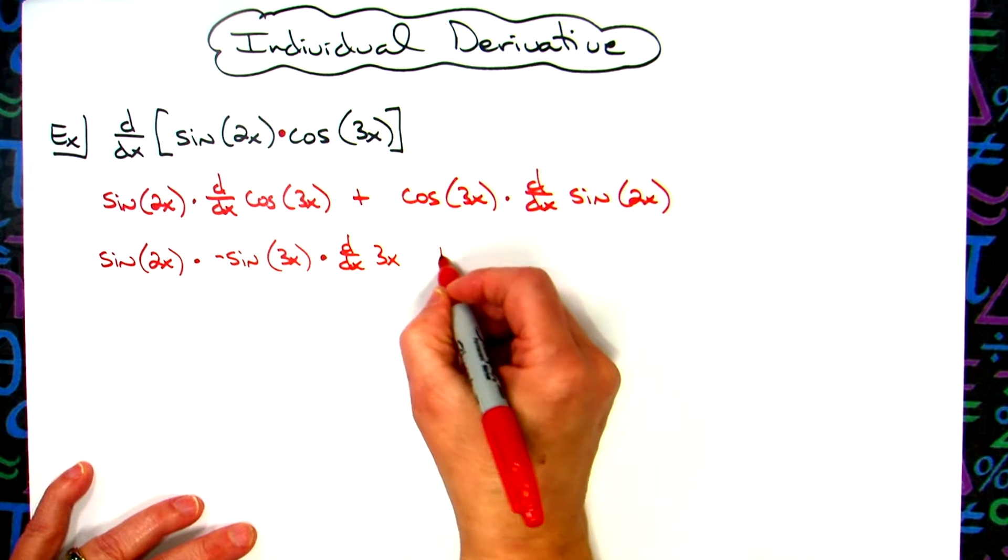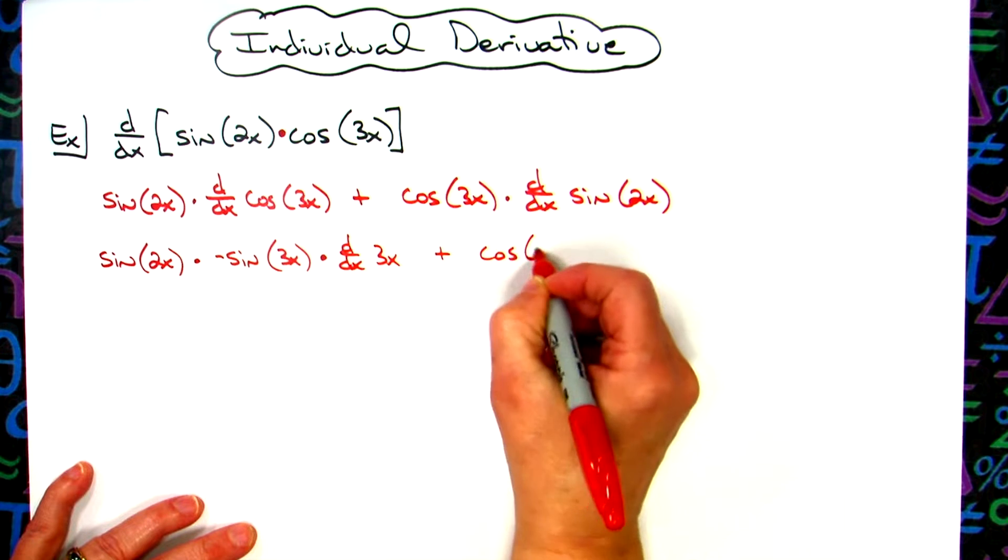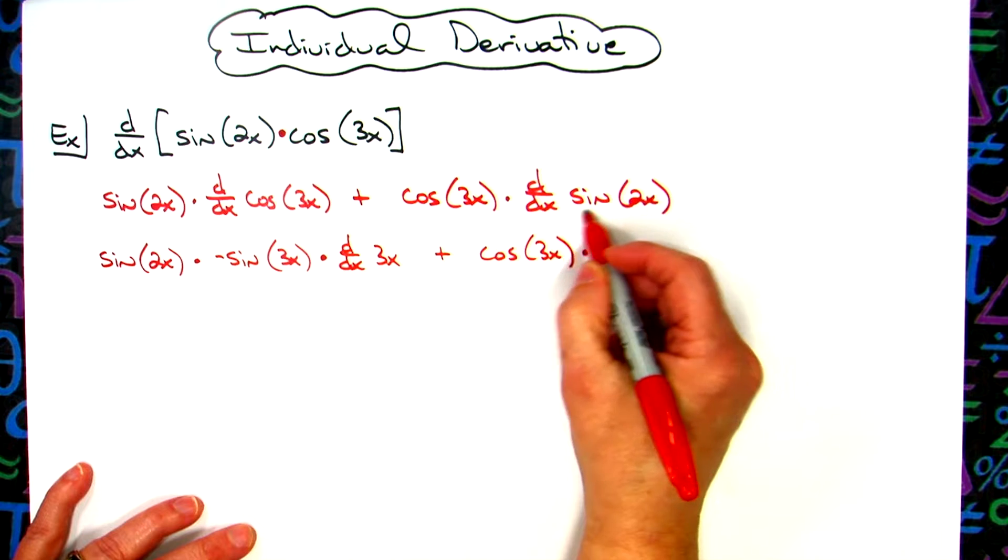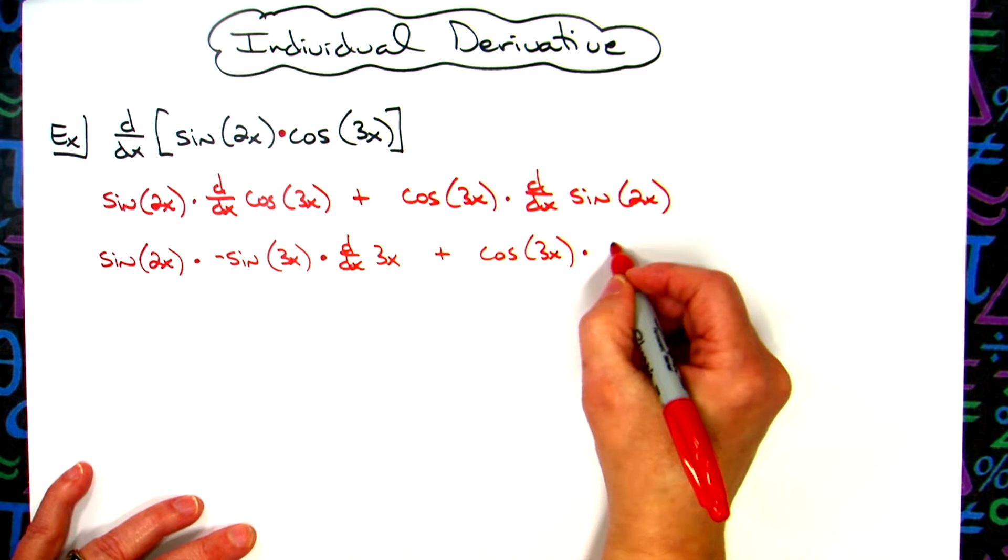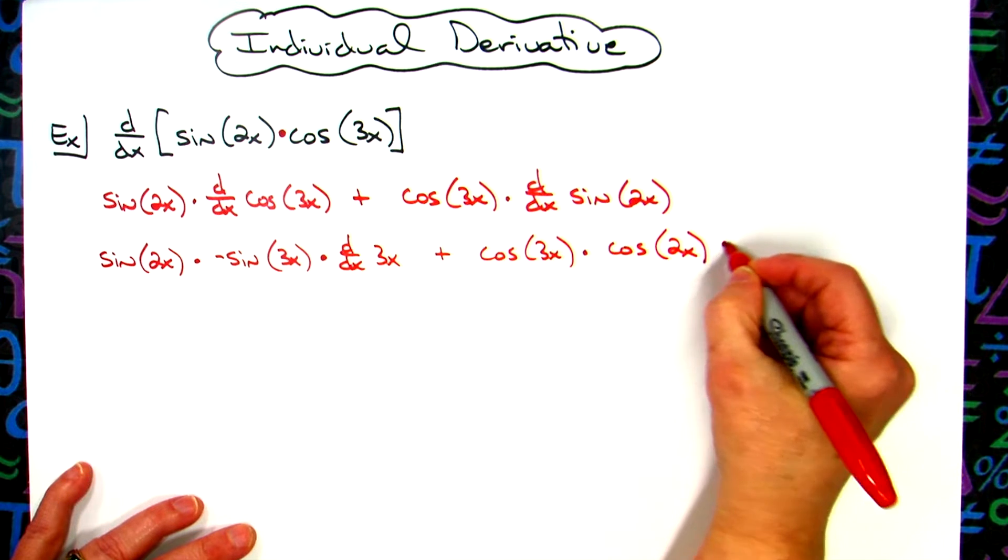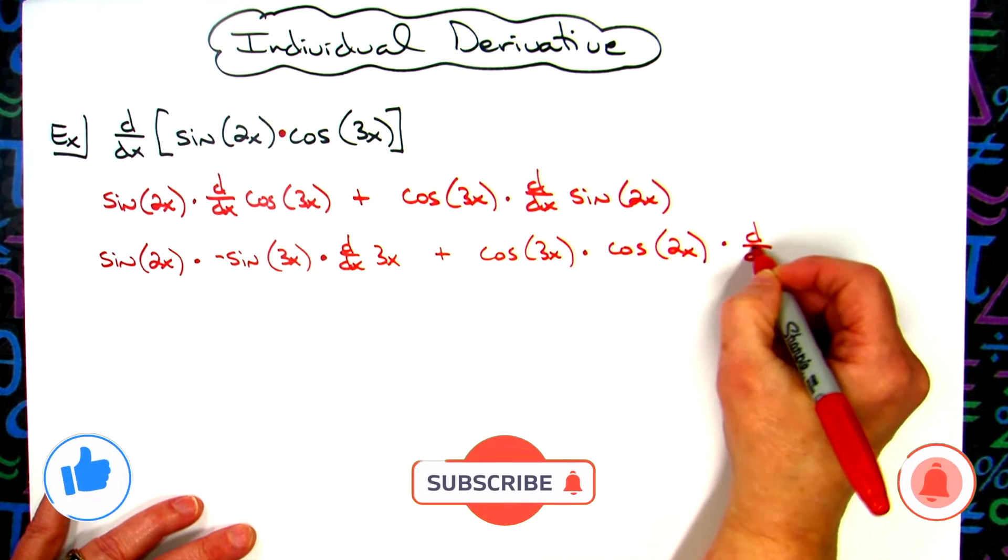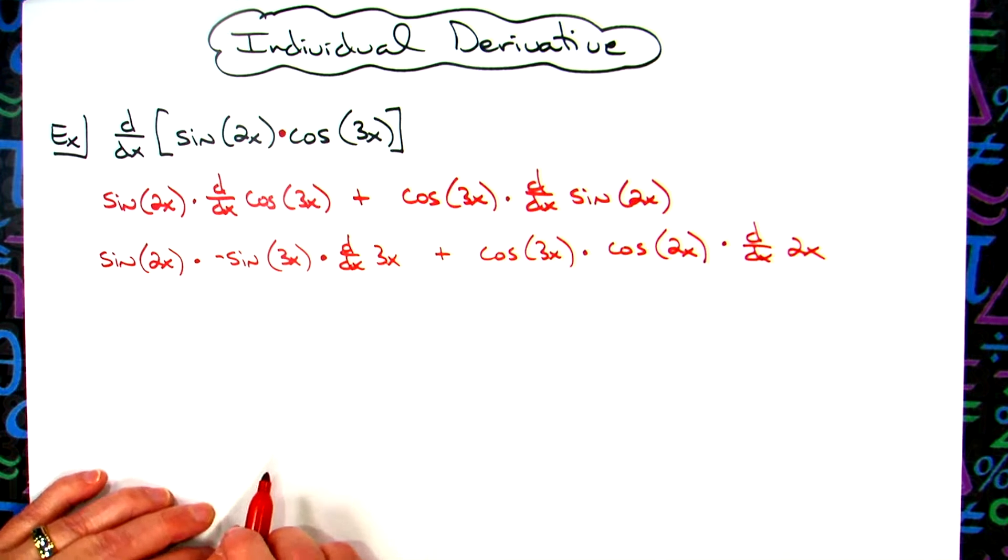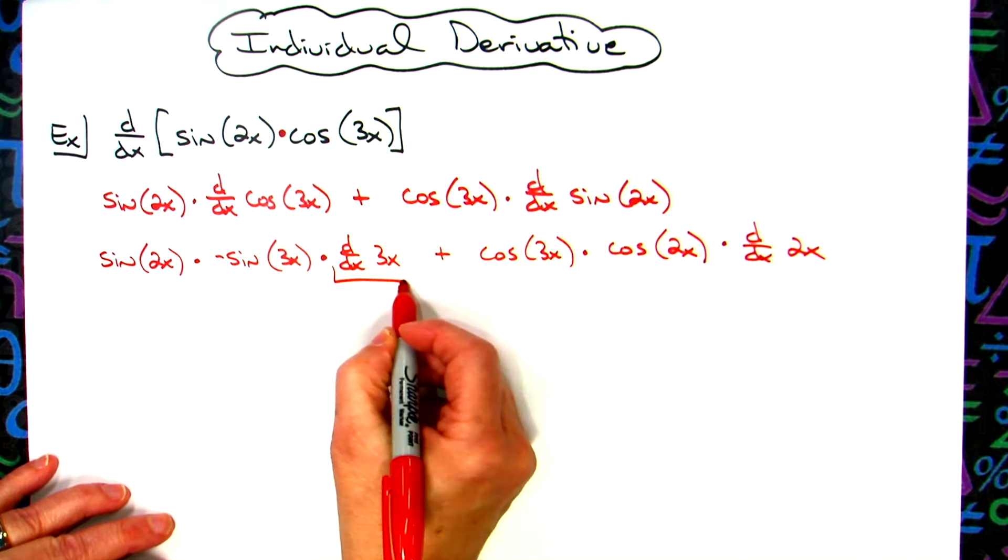All right, then we'll have the cosine of that 3x. We're going to leave it alone. And taking the derivative of our sine right there is going to be cosine, leaving the inside function alone, and then times the chain - d/dx of that 2x.